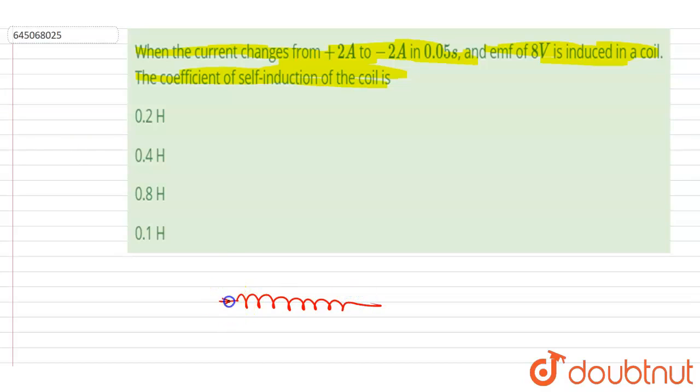and the current in this inductor is i, right, and let's say the inductance of this coil is L. So if I talk about the potential drop across it, V_L, it will be equal to L di by dt mod, right.